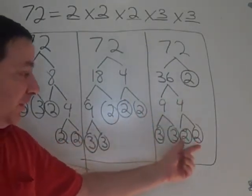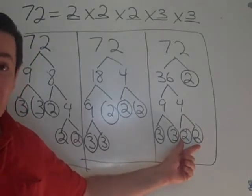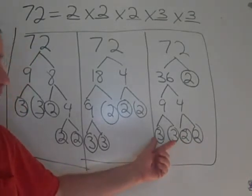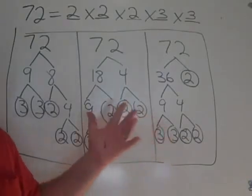You will be multiplying 2 by itself 3 times, and 3 by itself 2 times.